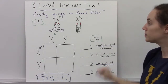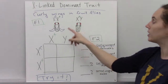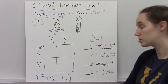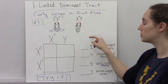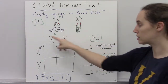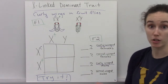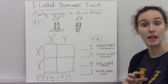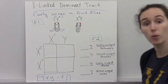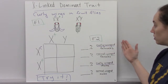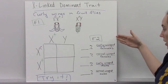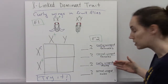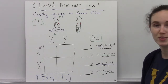Now I'd like you to try a practice problem. We have a heterozygous curly-winged female from the previous cross, and a wild type male. I've already set up the Punnett square for you. Try to fill in the boxes, complete the Punnett square, and then analyze it to figure out what percentage of each phenotype — curly-winged female, normal-winged female, curly-winged males, and normal-winged males — are present. Give it a try.